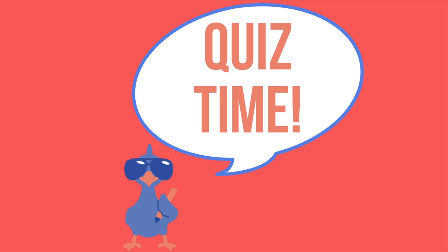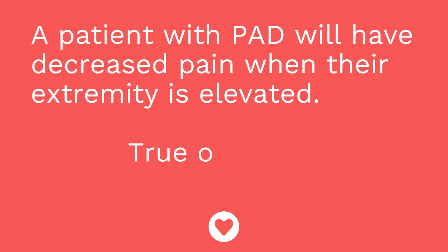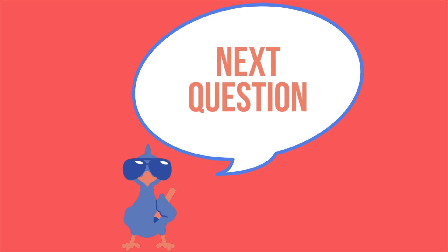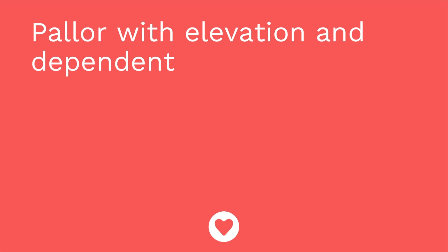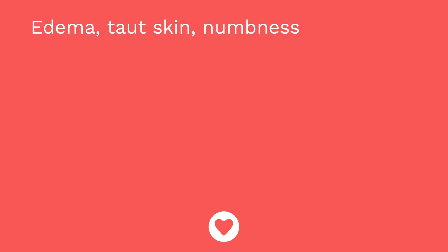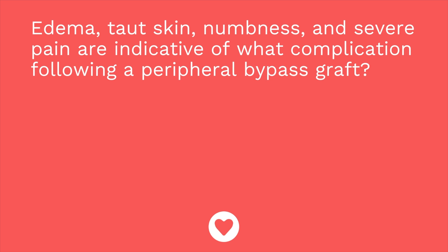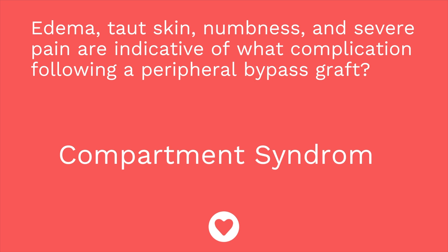Time for a quiz — I have three questions for you. Question one: A patient with PAD will have decreased pain when their extremity is elevated. True or false? The answer is false — they will have decreased pain when their extremity is in a dependent position, dangling. Question two: Pallor with elevation and dependent rubor are indicative of PAD. True or false? The answer is true. Question three: Edema, taut skin, numbness, and severe pain are indicative of what complication following a peripheral bypass graft? The answer is compartment syndrome. Hopefully you did well on the quiz. If not, be sure to review the flashcards, because it takes repetition to remember all of these different facts.